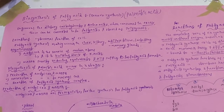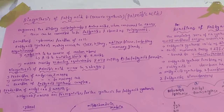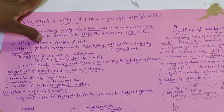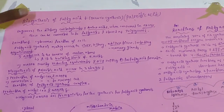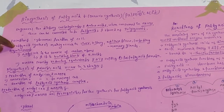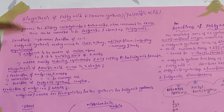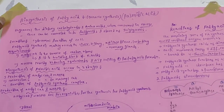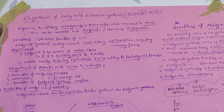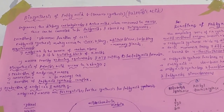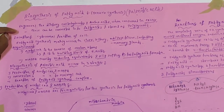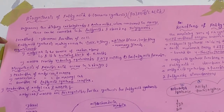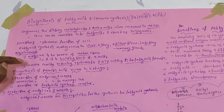The biosynthesis of fatty acids, or palmitic acid, occurs in the cytosolic fraction of the cell — that is, the cytosol. Fatty acid synthesis mainly occurs in the liver, kidney, adipose tissue, and lactating mammary gland. There are three requirements necessary for the synthesis of fatty acids.